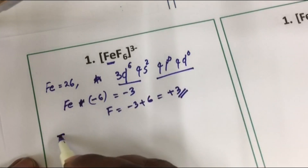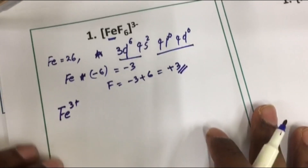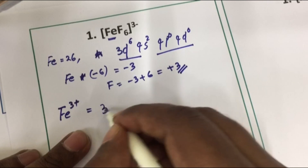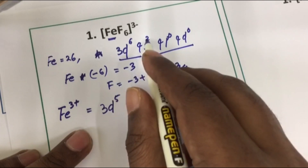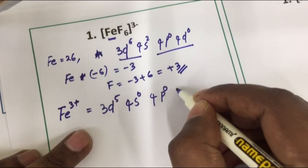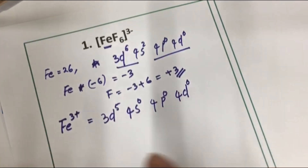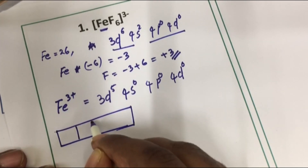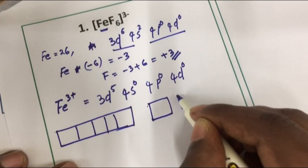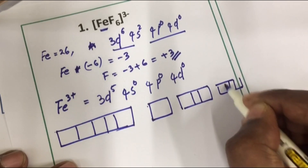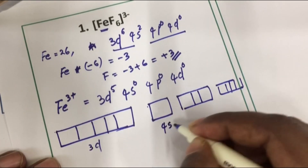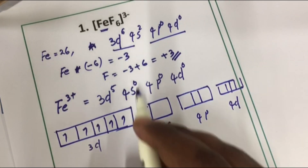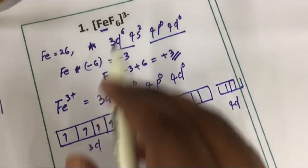Iron in the +3 oxidation state has the configuration 3d⁵. The orbital diagram is: 3d, 4s, 4p, 4d. We have 3d⁵, 4s⁰, 4p⁰, 4d⁰. We also have 6 fluoride ligands donating 6 pairs of electrons.